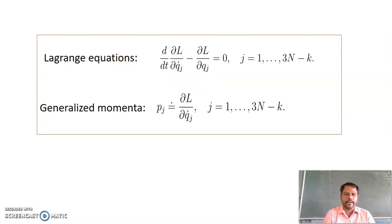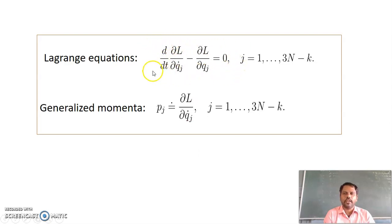Here T represents kinetic energy and V represents potential energy. Note that ∂L/∂Q_J dot is represented by P, which is the generalized momentum. This expression is known as the Lagrangian equation of motion. For a generalized non-conservative force, the zero on the right-hand side should be replaced by capital Q_J.